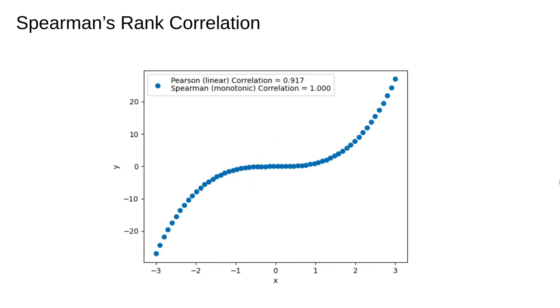Here is an example of non-linear but monotonic data. In this case, Spearman's correlation is exactly 1, indicating perfect monotonicity. Obviously, the data isn't linear, so the Pearson correlation coefficient, while still high, is not exactly 1.